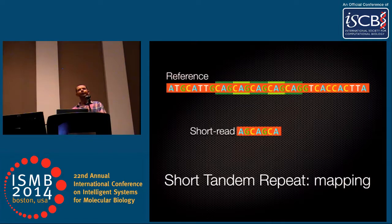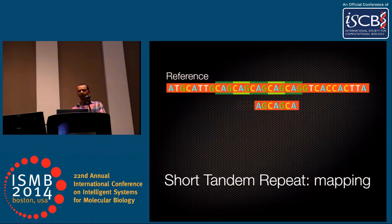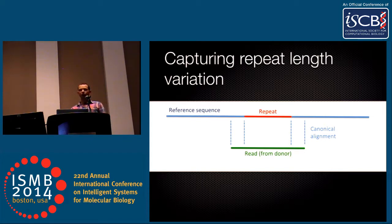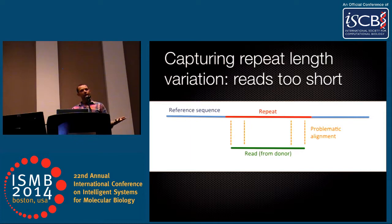There are issues with mapping sequence data to a reference, particularly to a repeat region. This toy example demonstrates that there are multiple positions at which a particular repeat can match equally well. As long as we have reads long enough to encompass the repetitive region — so there are flanking sequences on the reference that allow confident alignment — we should be fine. We can compare the mapped length on the reference to our read length and detect insertions or deletions. The problem arises when repetitive regions are longer than our sequence reads.